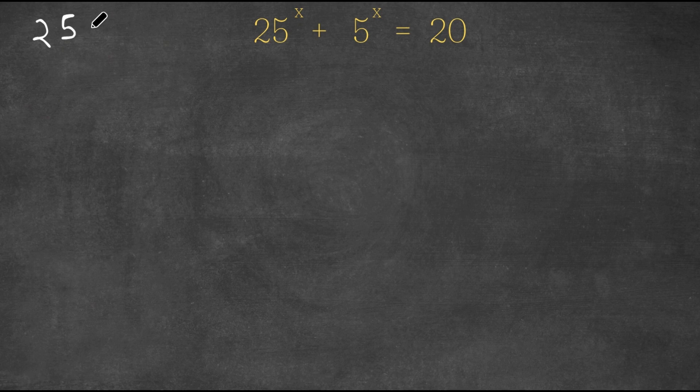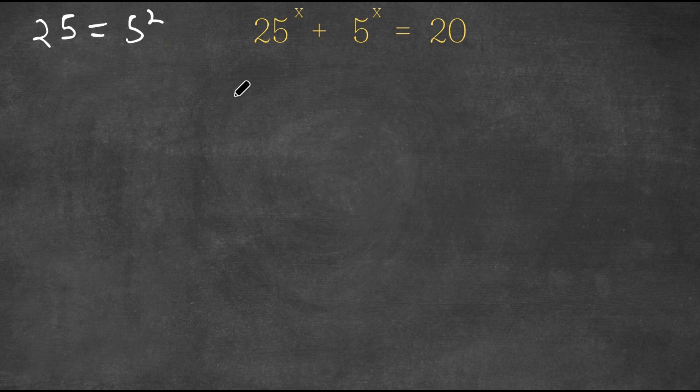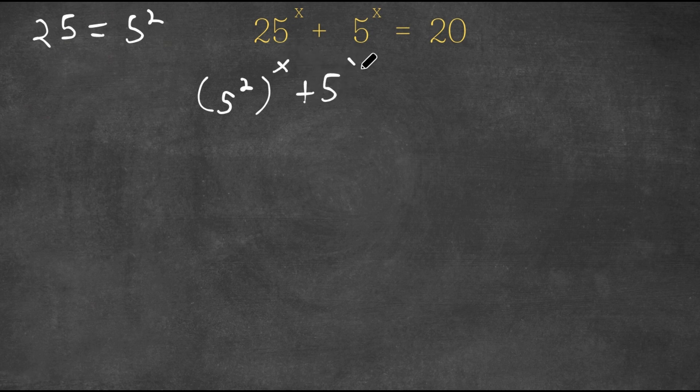Now 25, this is the same thing as 5 squared. So now I'm going to replace 25 with 5 squared to the power of x. So now plus 5 to the x is equal to 20.